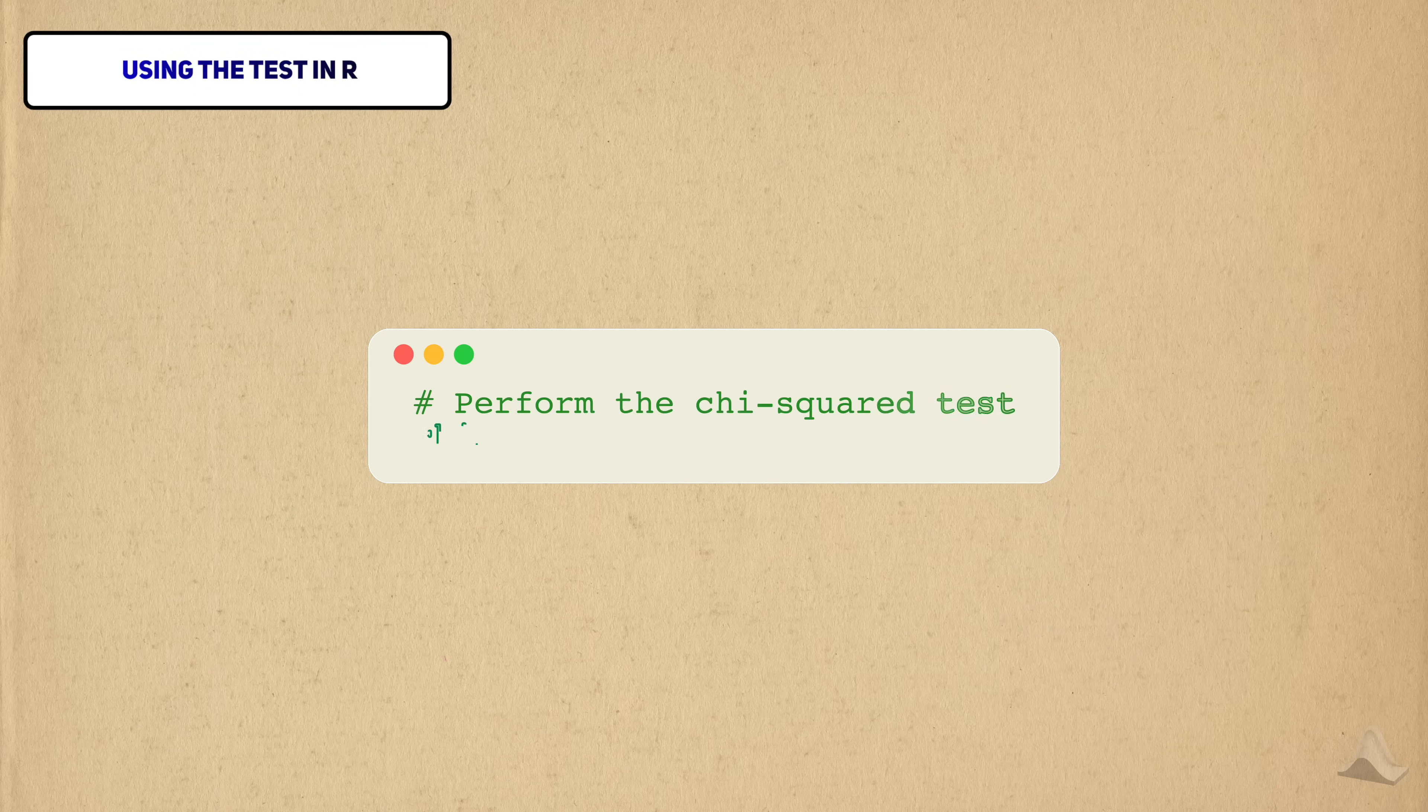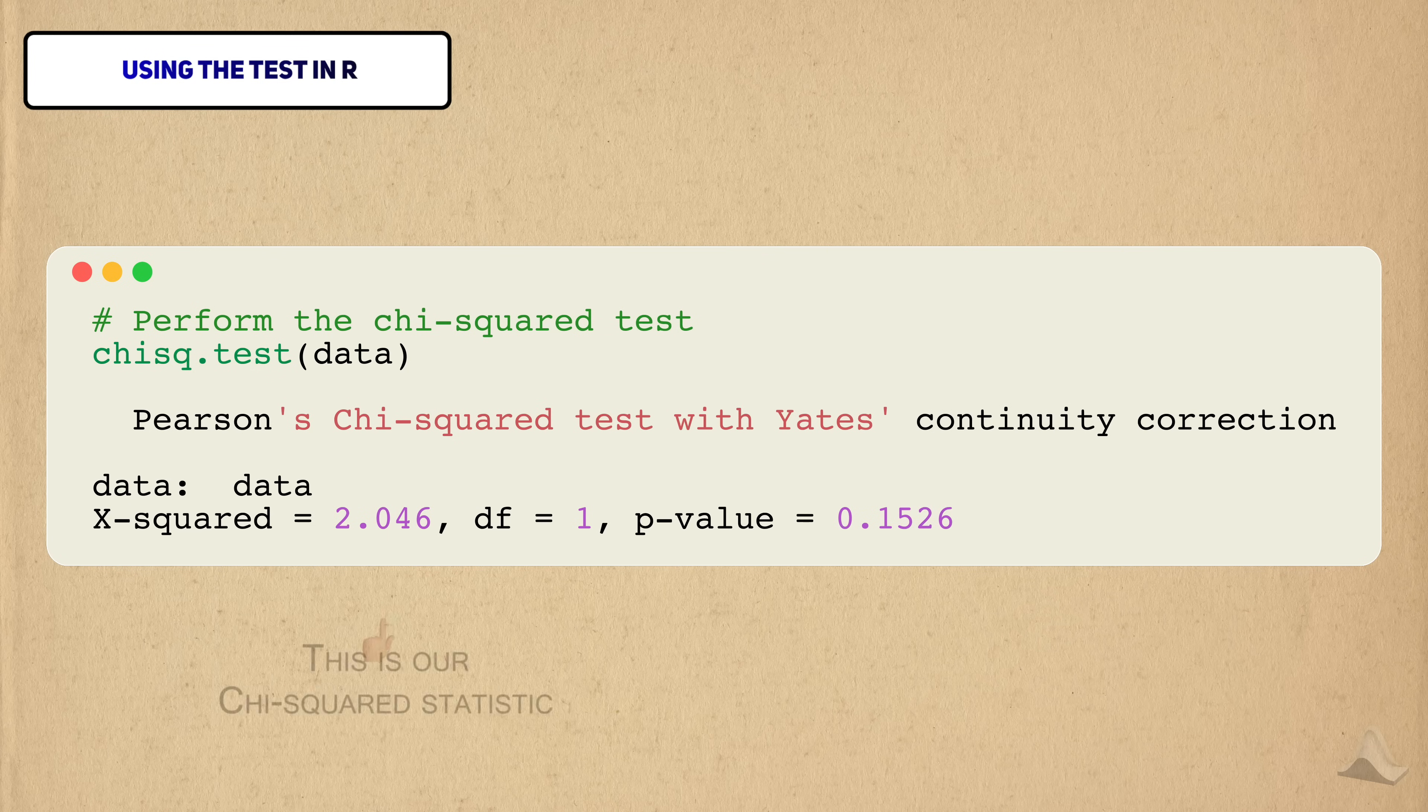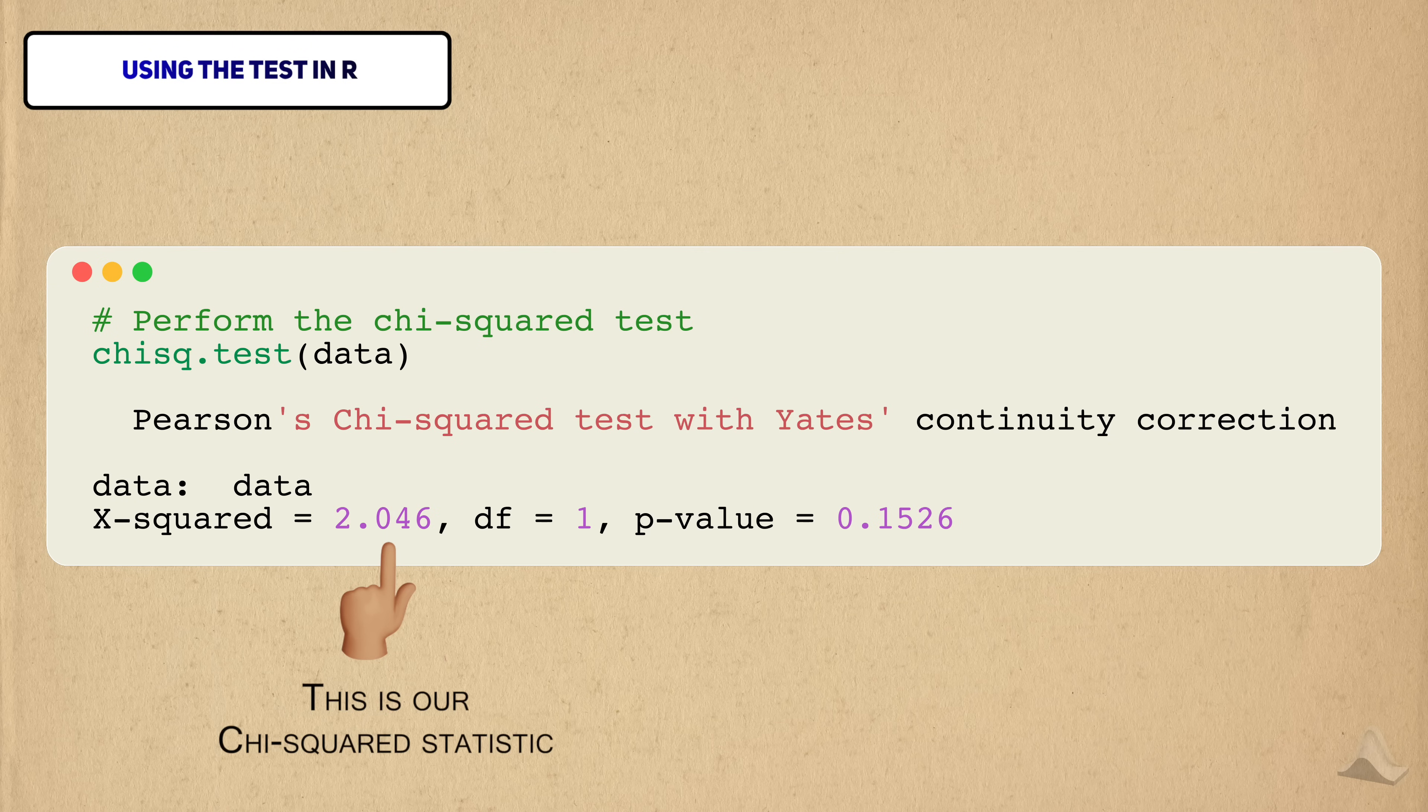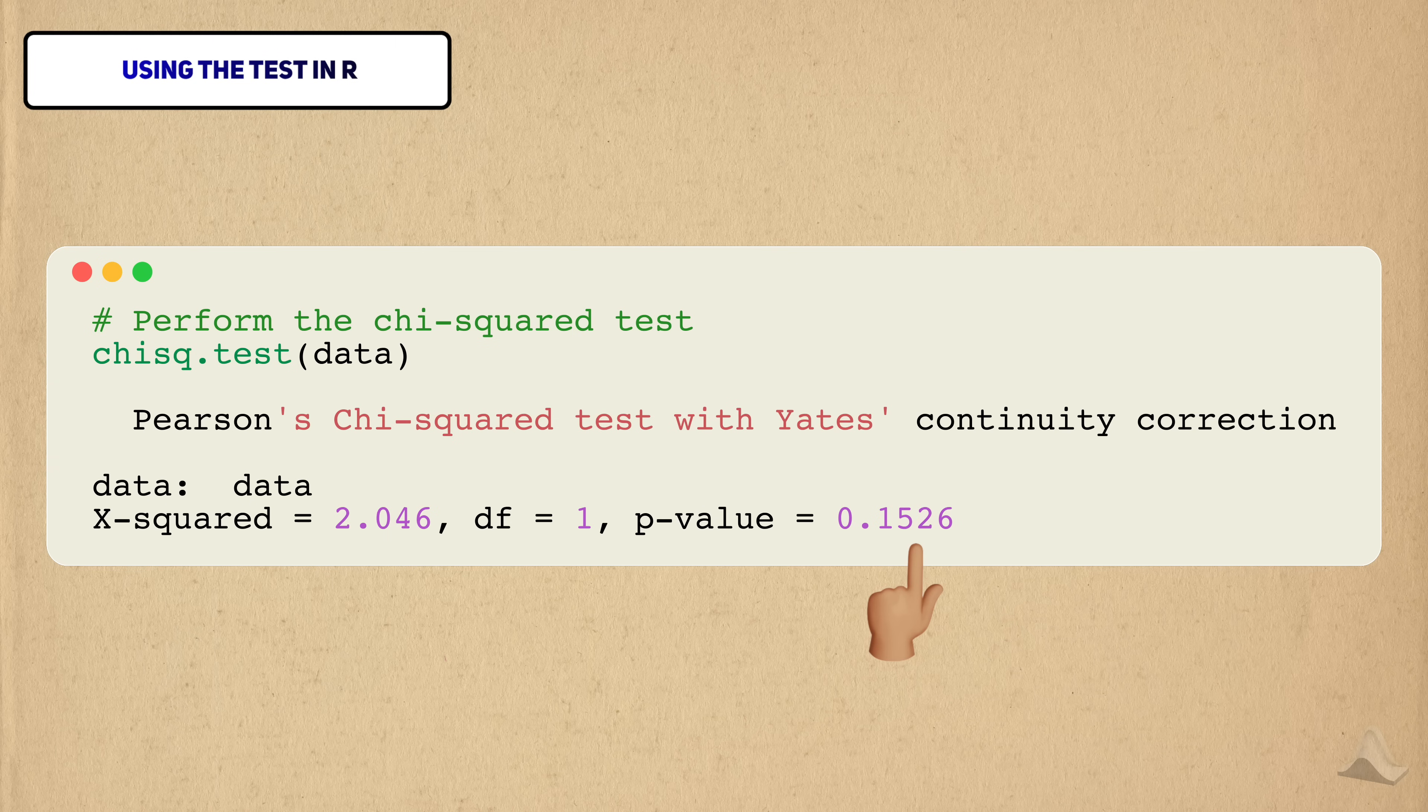Once the data is in matrix form, we can pass it to the test and look at the results. This X-squared result represents the value of the chi-squared statistic. And like we discussed earlier, you can see it has a single degree of freedom. The p-value in this case is 0.15, so we actually failed to reject the null hypothesis on the 5% significance level.